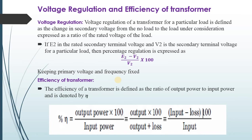The voltage regulation and efficiency of a transformer. Voltage regulation of a transformer for a particular load is defined as the change in secondary voltage from no load to the load under consideration, expressed as a ratio of the rated voltage of the load. If we consider E2 as the rated secondary terminal voltage and V2 as the secondary terminal voltage for a particular load, then percentage regulation is expressed as (E2 − V2) / V2 × 100, keeping primary voltage and frequency fixed.